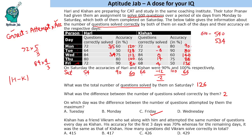Next question: Kishan has a friend Vikram who sat along with him and attempted the same number of questions every day as Kishan. His accuracy for the first three days was 70%, whereas for the remaining three days it was the same as Kishan's. So for the last three days, since total attempts and accuracy are both the same, Vikram's correct attempts match Kishan's.